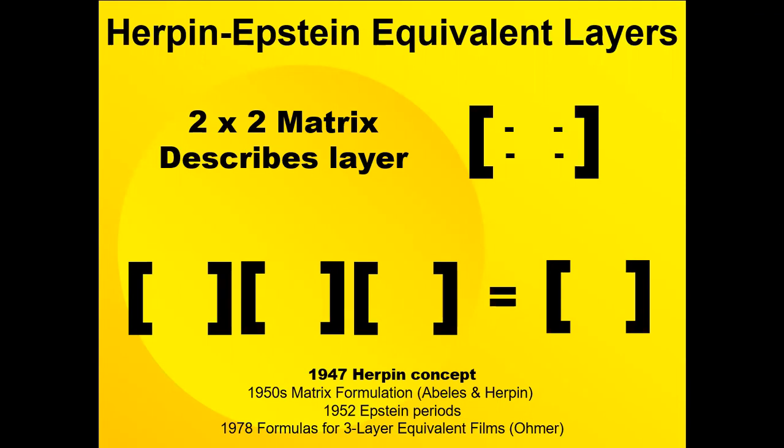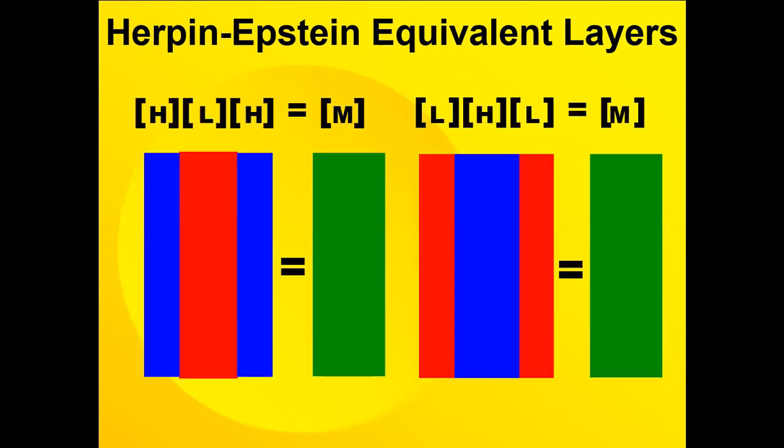He further stipulated that the outside matrices had to be symmetric or the same. With that combination you could produce the effective index of anything in between the highest and the lowest index. This might be shown in this graphic where the blue is high and the red is low and the green is something in between.